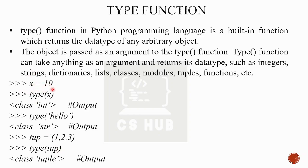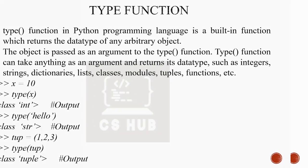If x equals 10, type(x) returns 'class int'. For 'hello' it returns string, for a tuple it returns tuple, and for a list it returns list. All types are specified. That is the type() function.